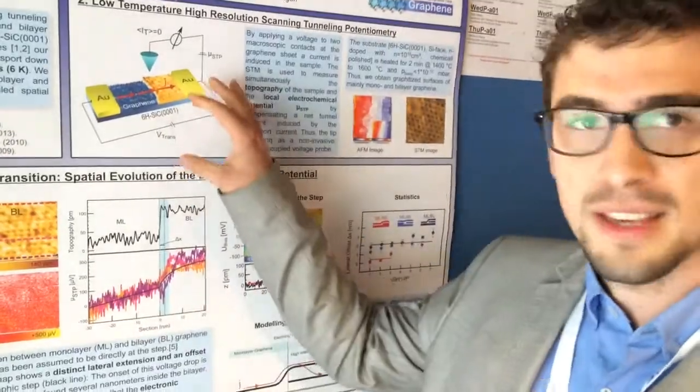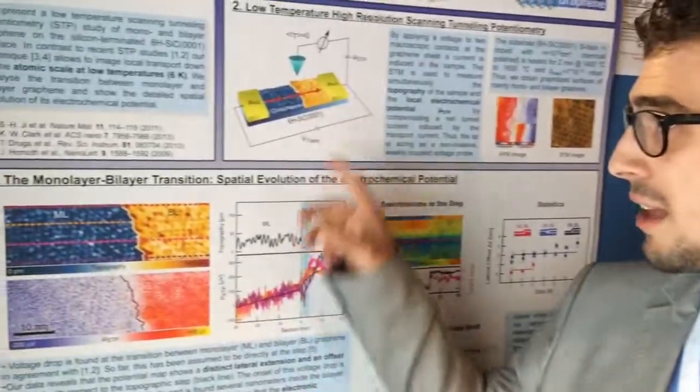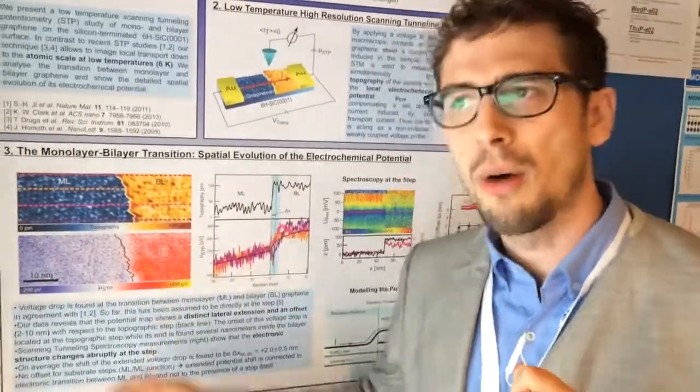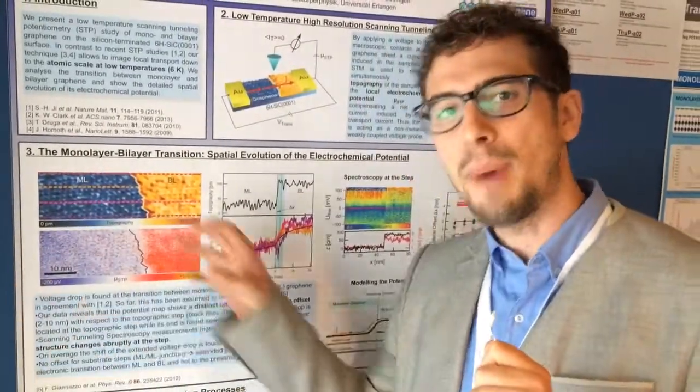We have an STM, a scanning tunneling microscopy setup, and we apply a current through the sample. What we look at is a transition between monolayer graphene and bilayer graphene sheets.